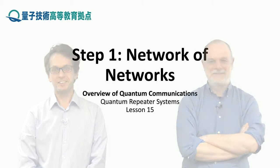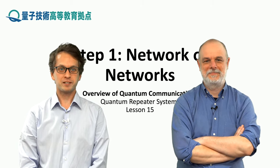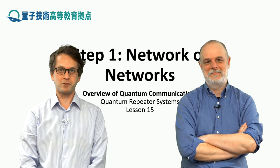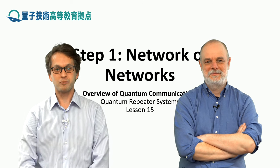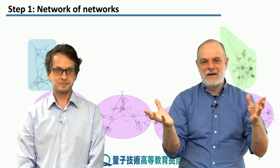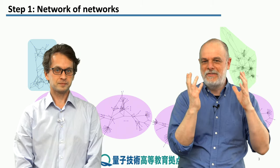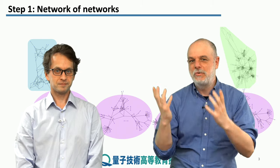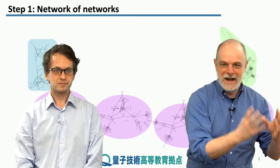Let's begin with Step 1: Network of Networks. This is a combination of words that you've been hearing quite a lot throughout this module, and here we will give you a slightly more concrete idea of what it really means. The internet is this really complicated thing, and there are a whole bunch of individual networks and individual nodes that make it up — it's a network of networks.